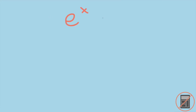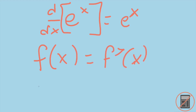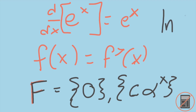Hello, and welcome back to NoCalc. This is the second of a three-part series on proving that e to the x is its own derivative. In the last video, we proved that if a function is equal to its own derivative, then that function must be part of a family of functions, which had to be either just the function 0 or some set of constant multiples of an exponential, which we called alpha to the x. Let's get started.